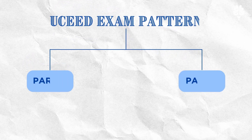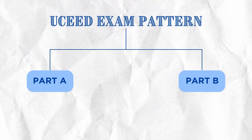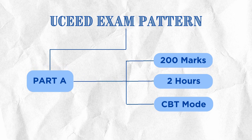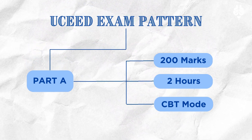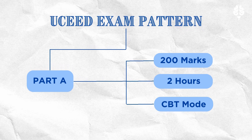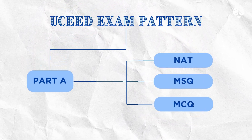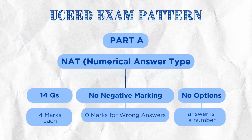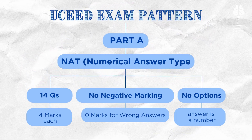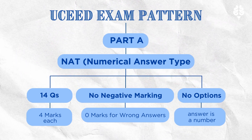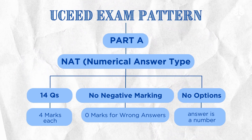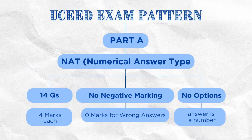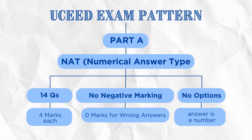The UCEED exam is divided into two parts: Part A and Part B. Part A consists of a total of 200 marks and a maximum time of two hours is allotted. This part will be administered through a computer-based test and will consist of three sections. Section 1 is called NAT, Numerical Answer Type. This consists of 14 questions, four marks each, and there is no negative marking in this section. For these questions, the answer is a number that needs to be entered using a virtual keyboard on the computer screen. No choices will be shown for these questions.